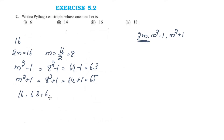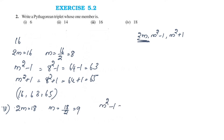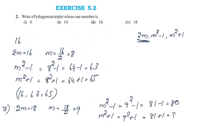For the number 18: m = 9, so m²−1 = 81−1 = 80, and m²+1 = 81+1 = 82. The Pythagorean triplet is 18, 80, 82.